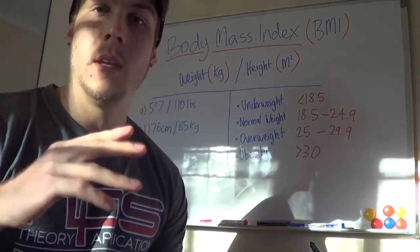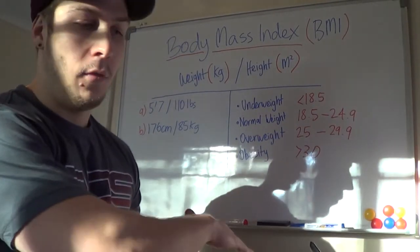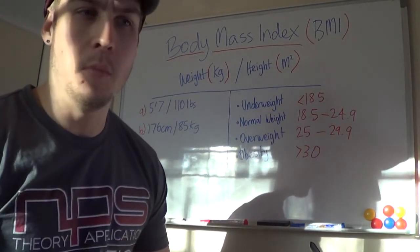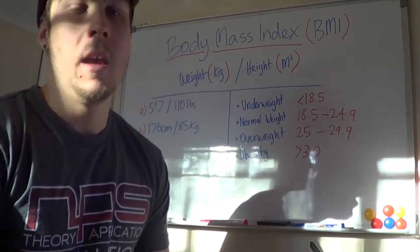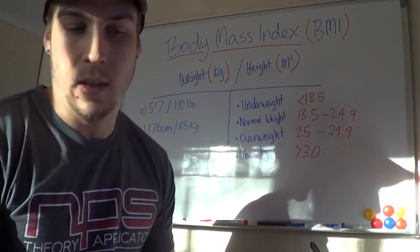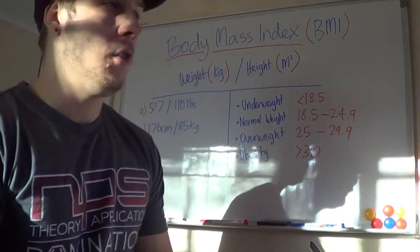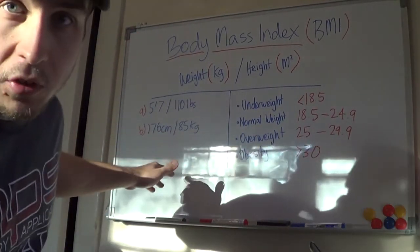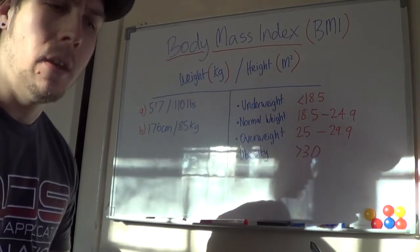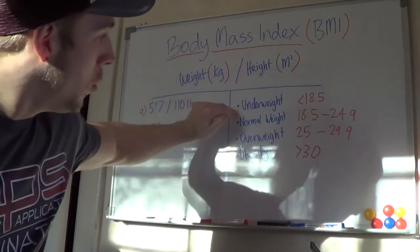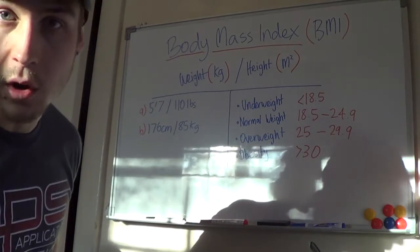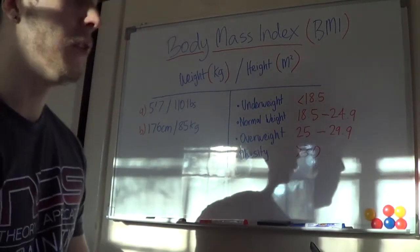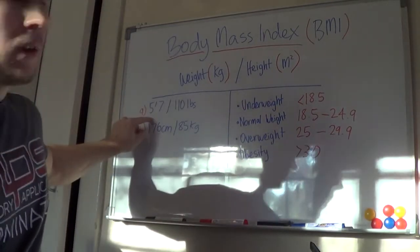There are some sub-categories within obese — like morbidly obese or super obese — but I don't really see the need to go into that direction. What we're going to do is look at a couple of individuals and I want you to guess where they fall on the BMI scale.